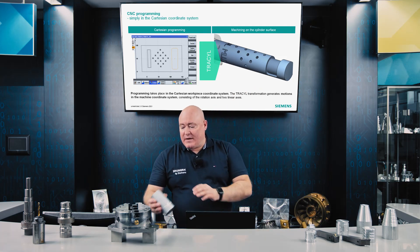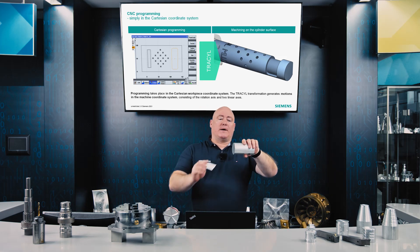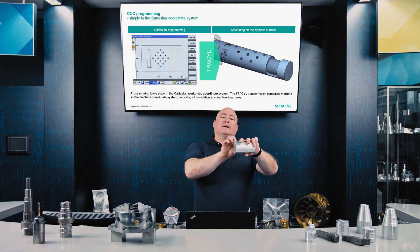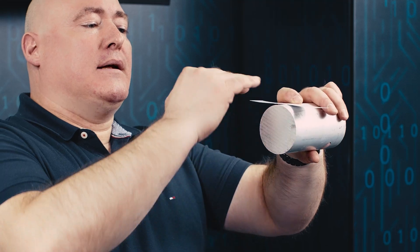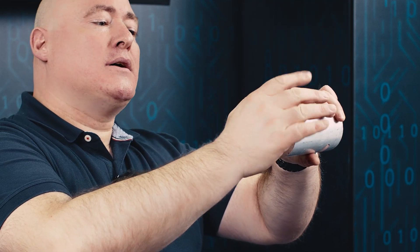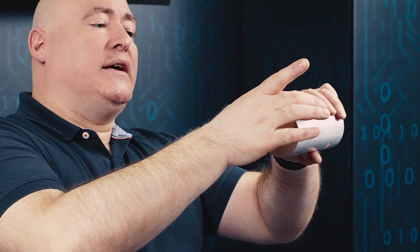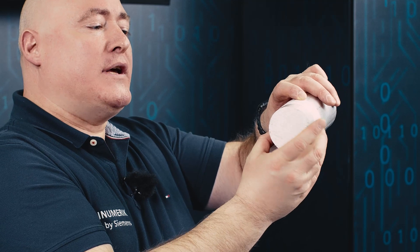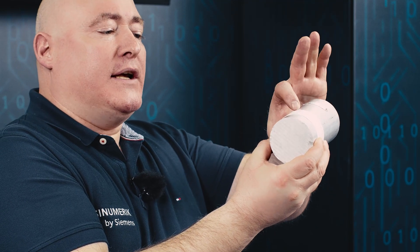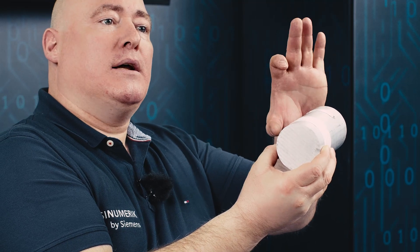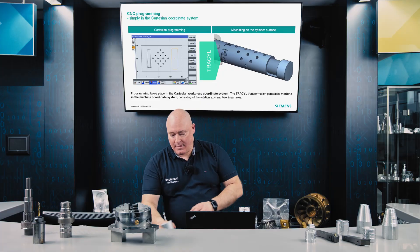So, this is our cylinder, and this is to become our future pocket, with planar programming. As mentioned before, the projection of this previously unwound slot or pocket is implemented on the cylinder surface diameter.